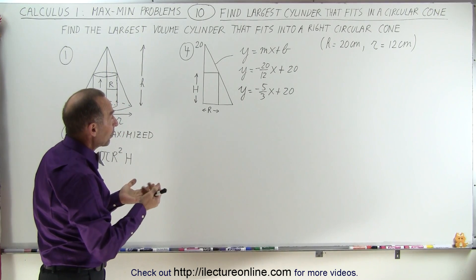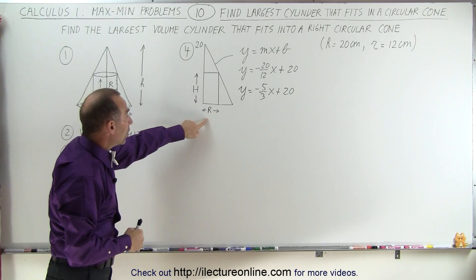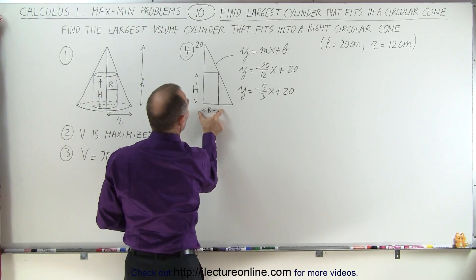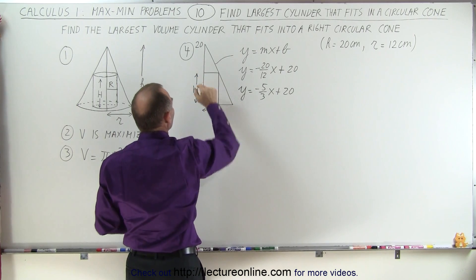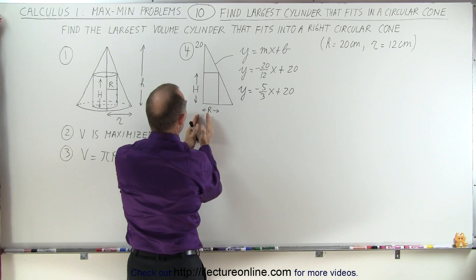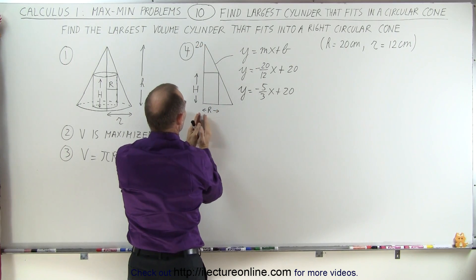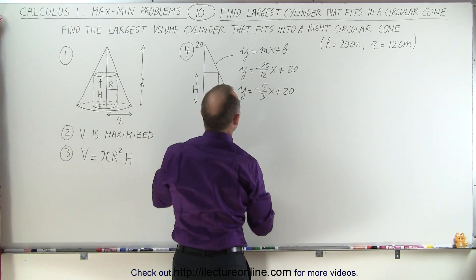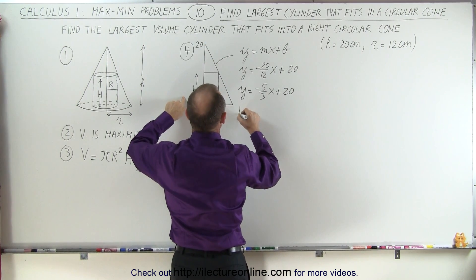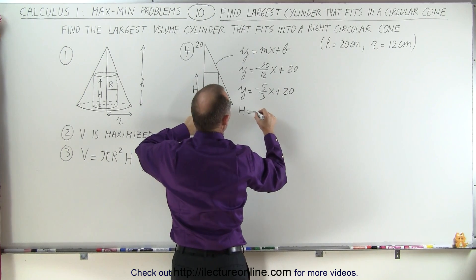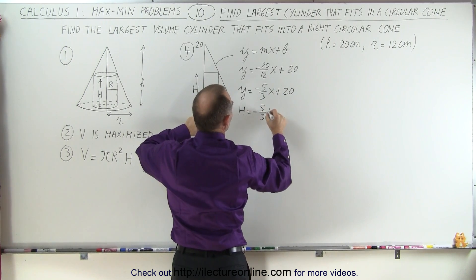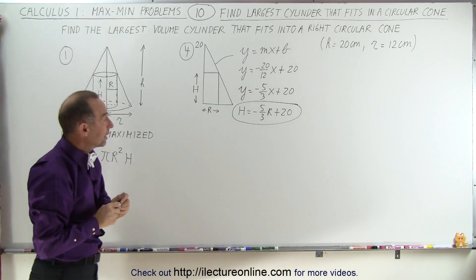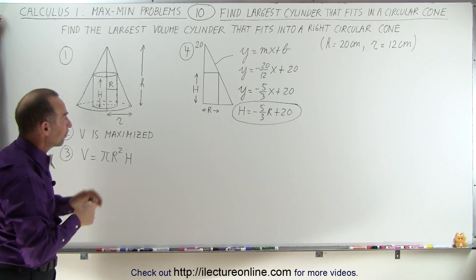It turns out we can relate Y and X to H and R because they have the same proportions. R is the value for X and H is the value for Y. As X becomes smaller, Y becomes larger — so as R becomes smaller, H becomes larger. Therefore H equals minus 5 over 3 times R plus 20. Now we have our constraint — a relationship between the height and the radius of the cylinder.